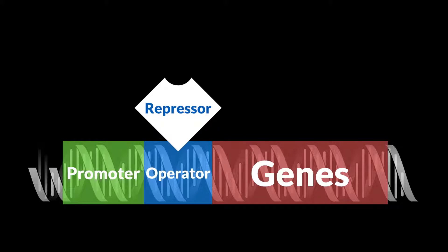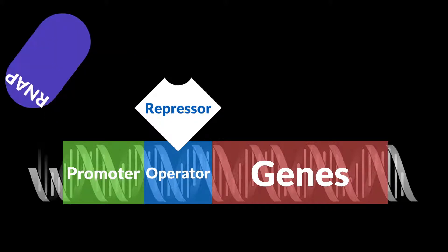The repressor is most of the time bound to the operator. In order for the genes to get transcribed into RNA, the RNA polymerase needs to bind to the DNA in the promoter region. But here's the catch: RNA polymerase will not bind to the promoter as long as the repressor is bound to the operator. So in order for the genes to get transcribed, the repressor needs to get out of there somehow.